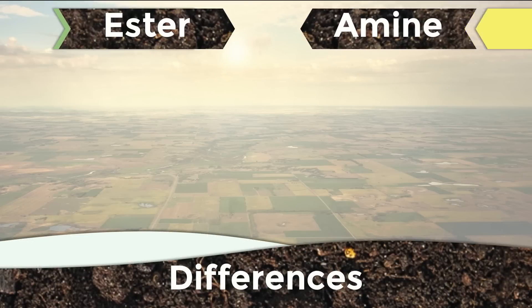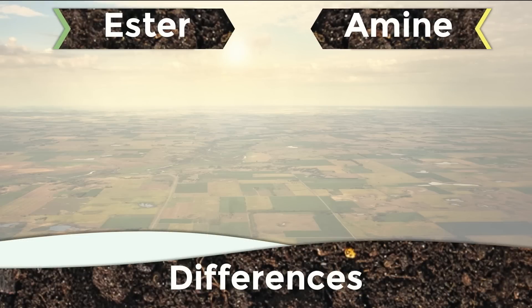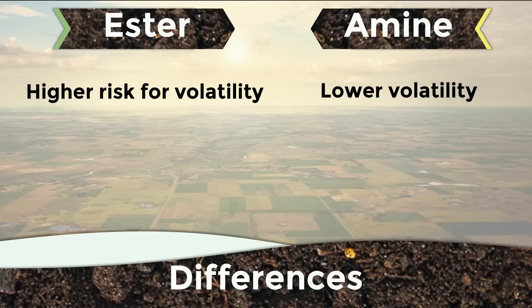One of the biggest differences between the two is that esters have a higher vapor pressure and volatilize more than amines. This volatility can increase significantly in high temperature, high wind conditions. During this kind of weather, amines are the better choice for any 2,4-D application, particularly around specialty crops where drift and volatility are always a concern.